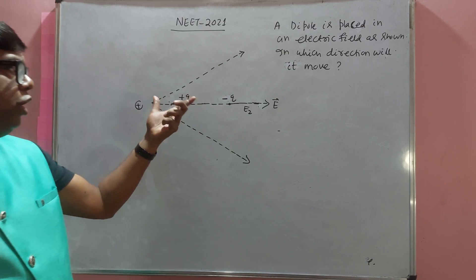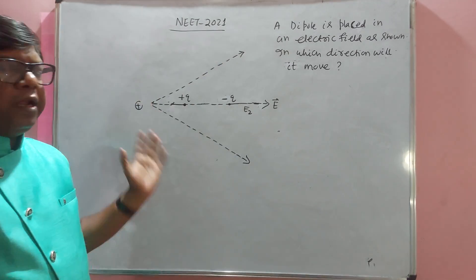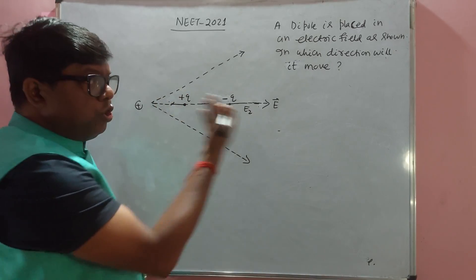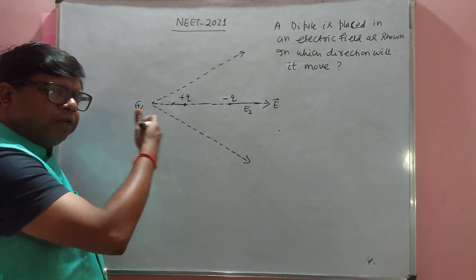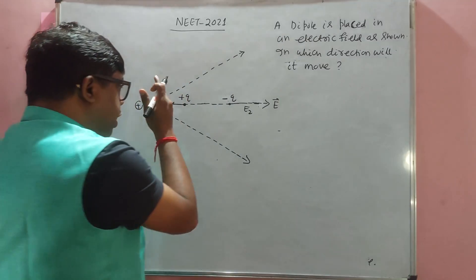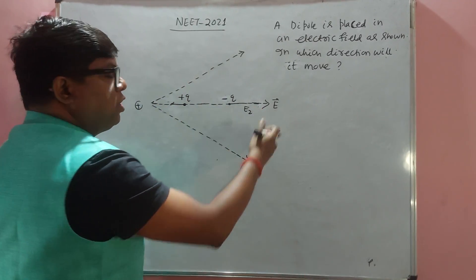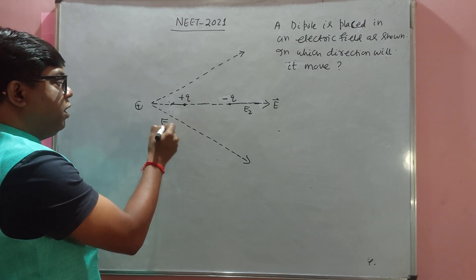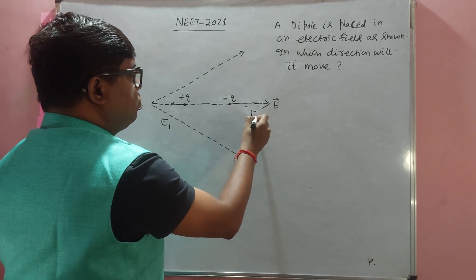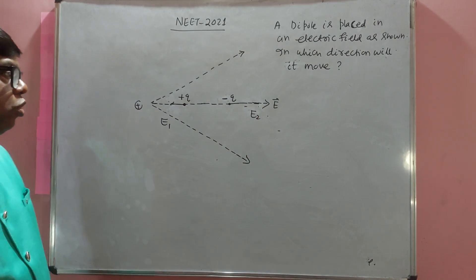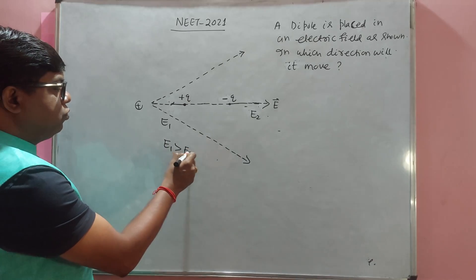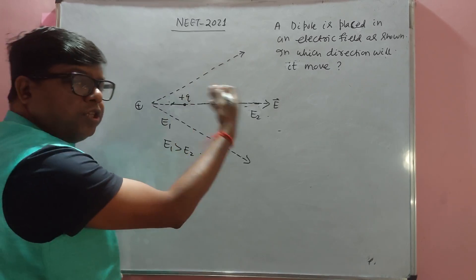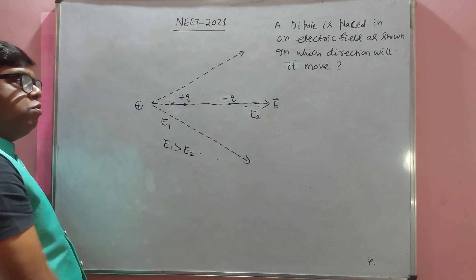When the dipole is placed in this non-uniform electric field, we need to find in which direction it will experience a net force and move. You know that as we move away from the source, the electric field decreases. Let the field on the left side be e1 and on the right side be e2, so e1 is greater than e2.